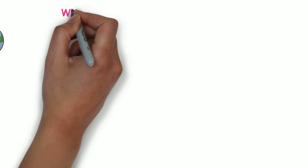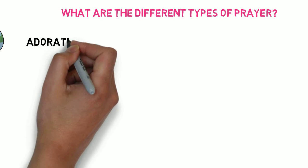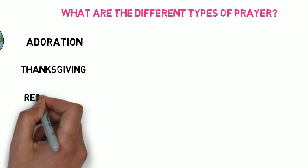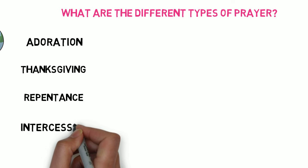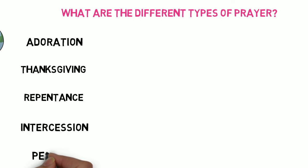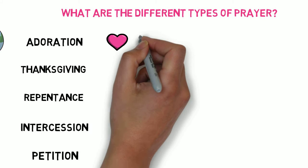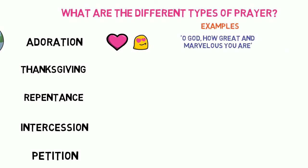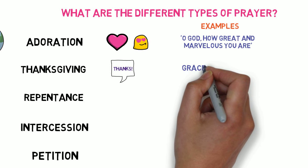What are the different types of prayer? There are five different types of prayer for Catholics: Adoration, Thanksgiving, Repentance, Intercession, and Petition. Firstly, Adoration — this is praising or adoring God. For example, 'O God, how great and marvellous you are!'